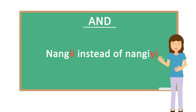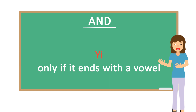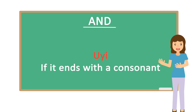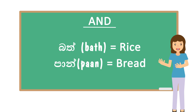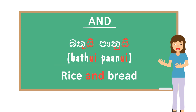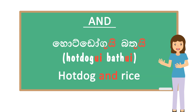If the word ends with a consonant sound, you have to end it with UI. As an example, the word for rice is BAT, and the word for bread is PAN — both end with consonant sounds. So if you want to say 'rice and bread,' you have to add UI to both of these words.